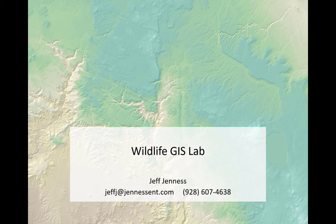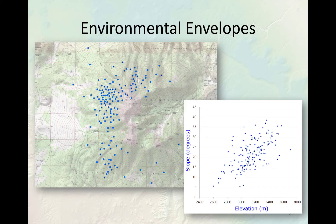Each of these methods — environmental envelopes, minimum convex polygons, and kernel densities — are all good solid methods for wildlife analysis. Most wildlife biologists use them. Most of us actually go a step or two beyond what you'll do in this lab, but this lab will show you the basics. And once you've got this down, it becomes a lot more fun to try variations on the methods.